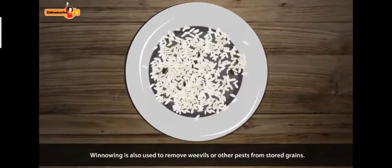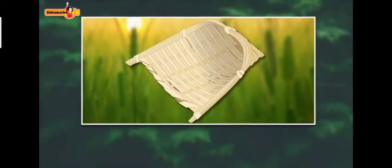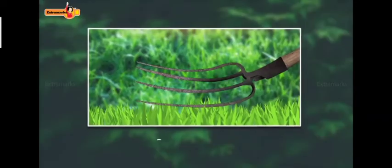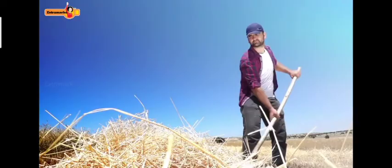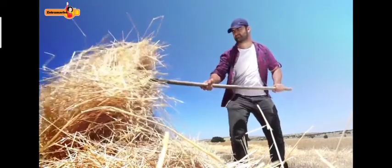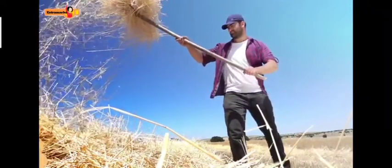Winnowing is also used to remove weevils or other pests from stored grains. The techniques used for winnowing include the usage of winnowing fan, which is a shaped basket shaken to remove the chaff, or the usage of a tool such as winnowing fork or shovel on a pile of harvested grain. With the help of winnowing fork or shovel, the farmer throws the grains in the air to separate the lighter and heavier components.